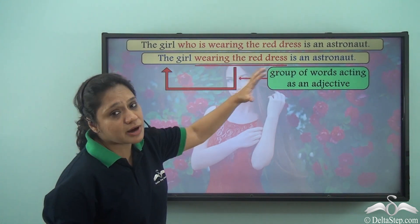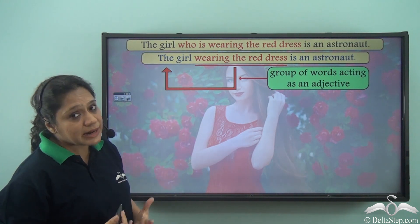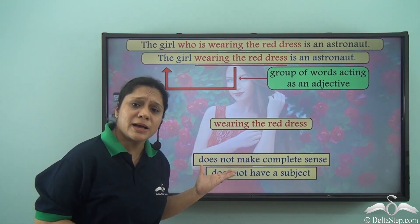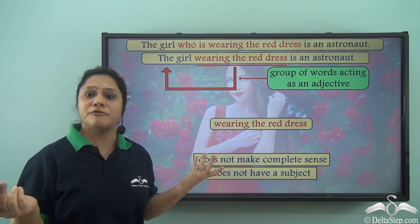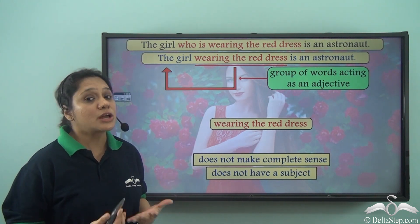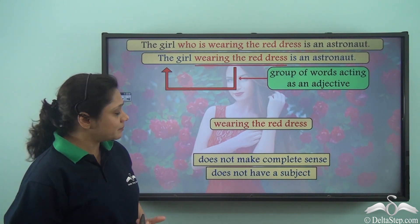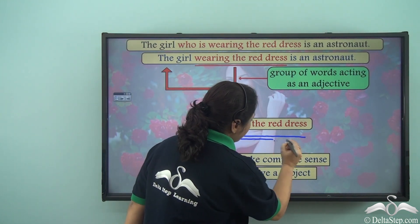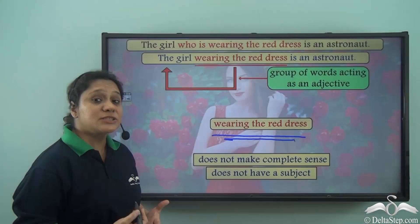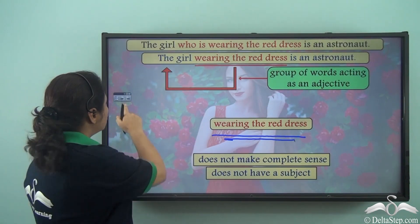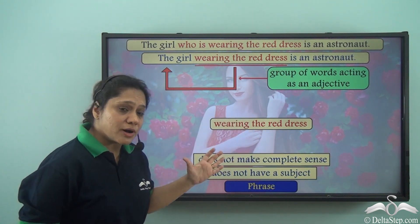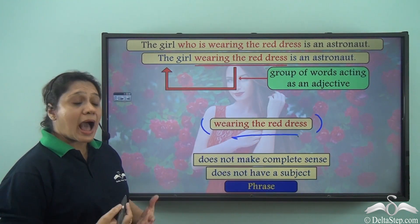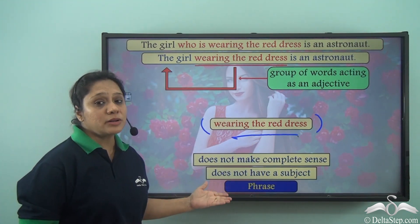So let us take the group of words 'wearing the red dress' separately and look at it. 'Wearing the red dress' does not make complete sense on its own — it does not make complete sense. And we see that this group of words 'wearing the red dress' has no subject. So this group of words which does not make complete sense and does not have a subject is known as a phrase.